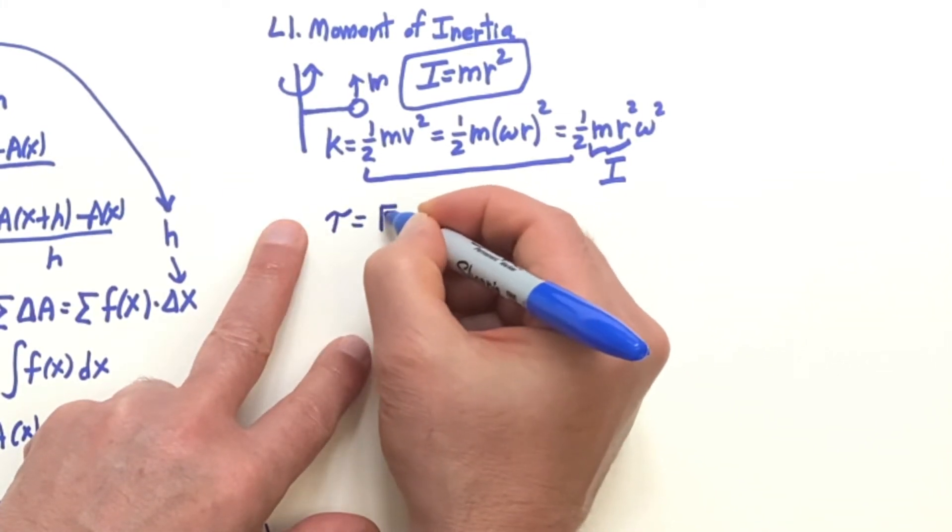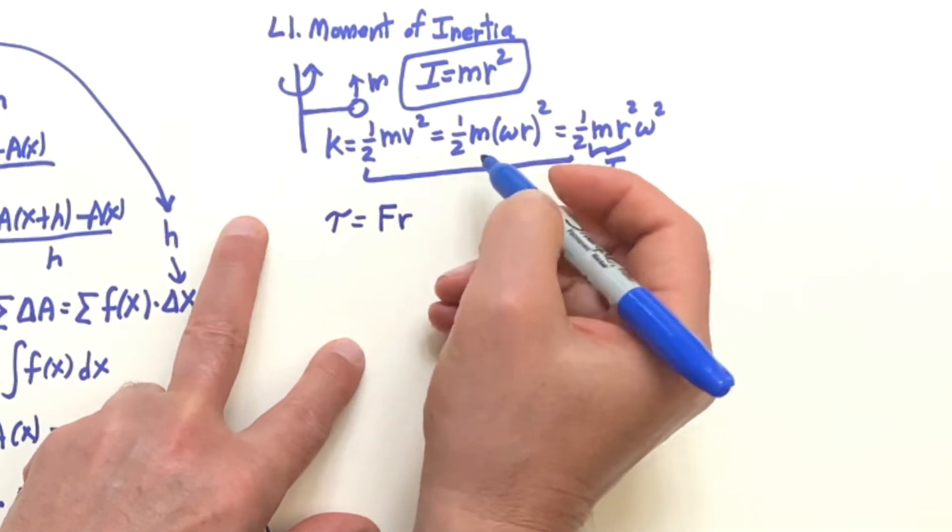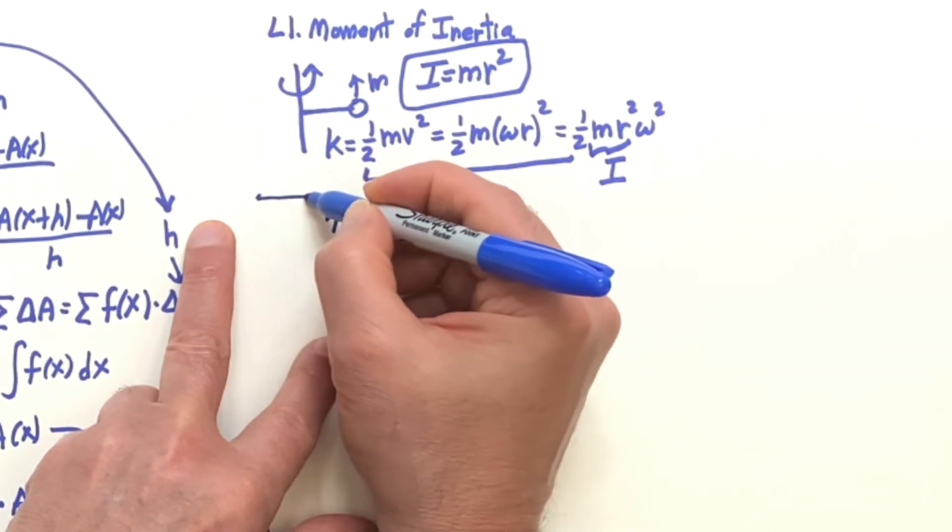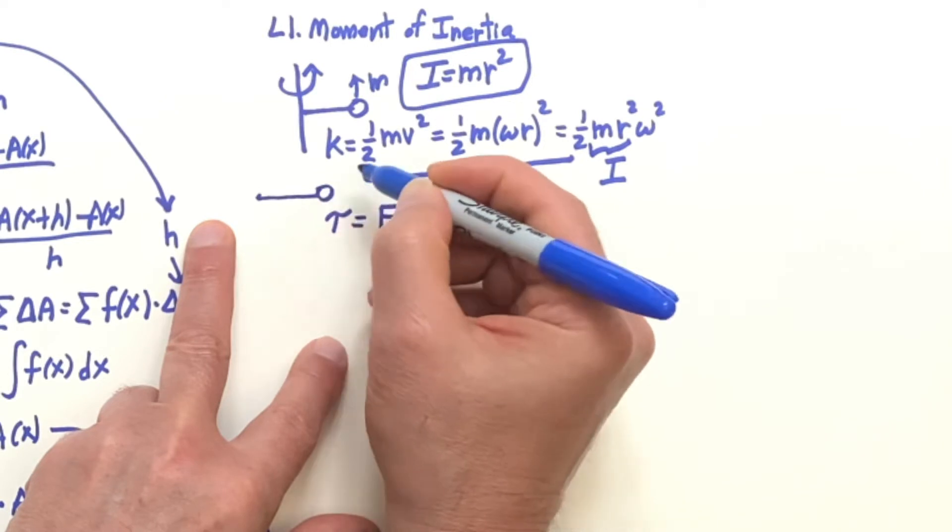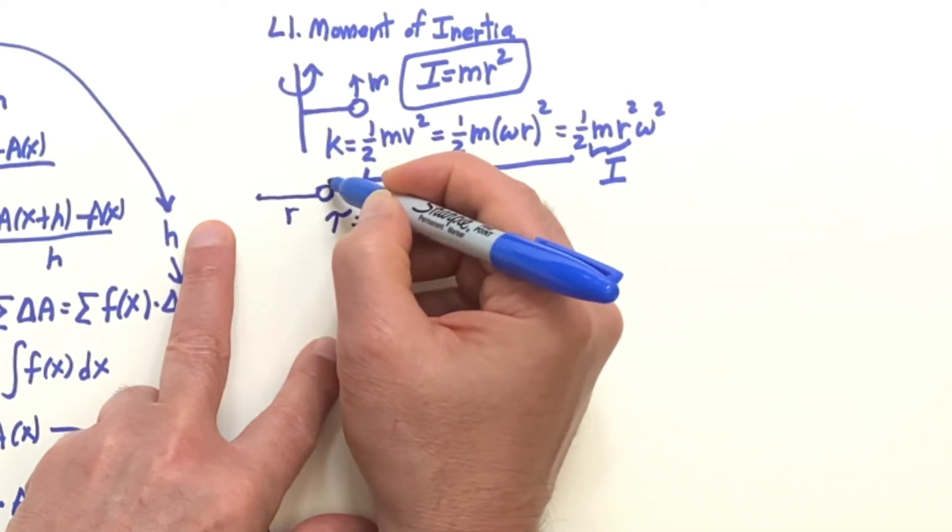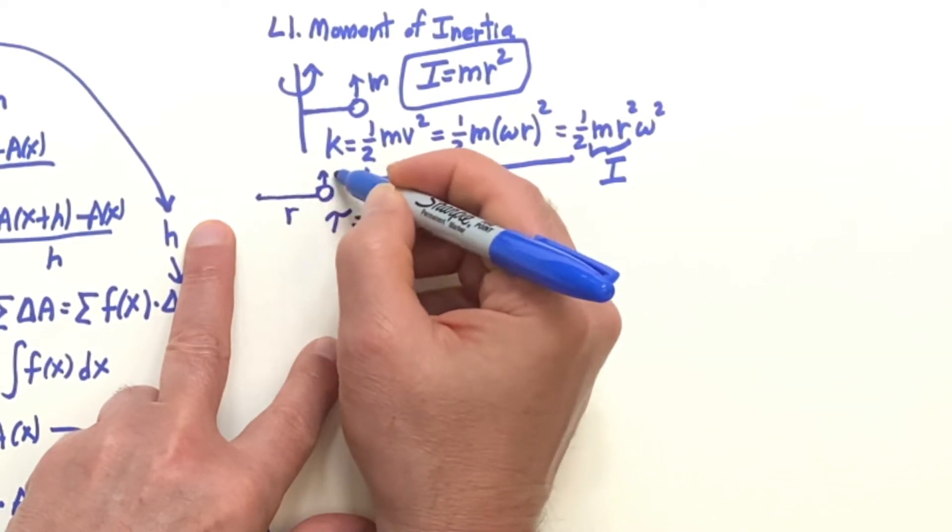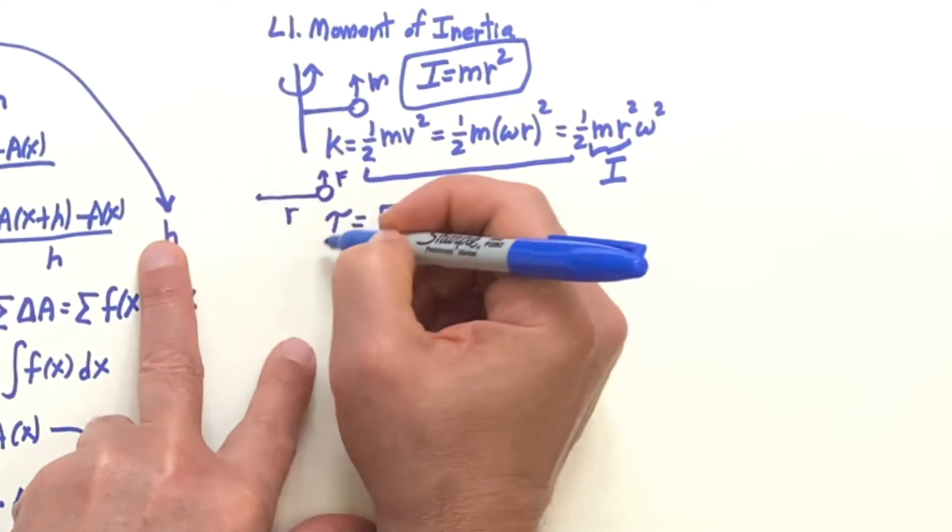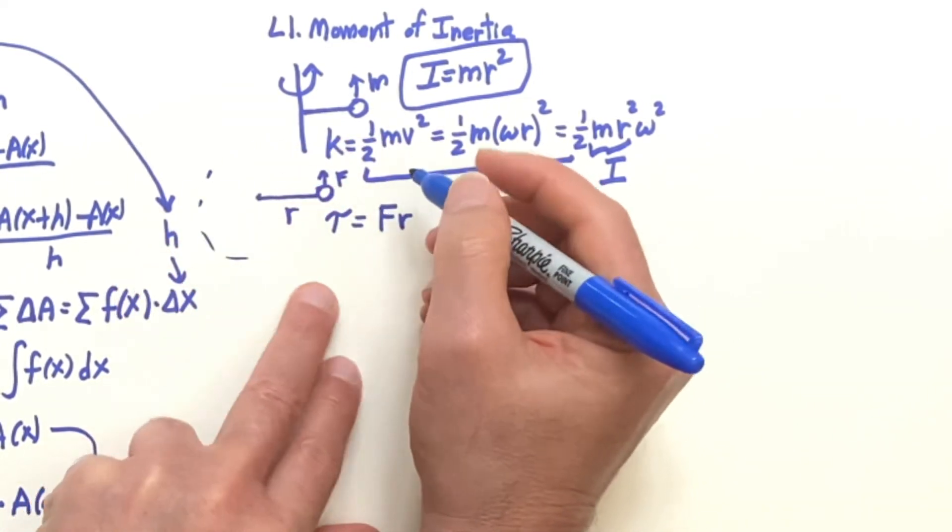It is the force times r. So if you have a thin string, and then you have the mass, this is r, that a force here will get this thing going in a circle.